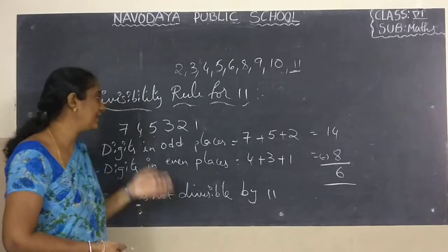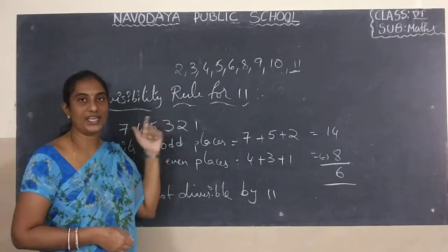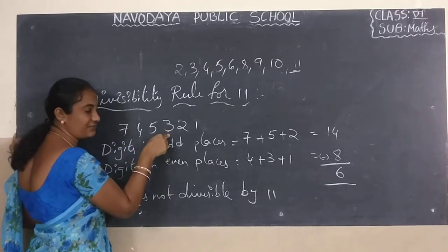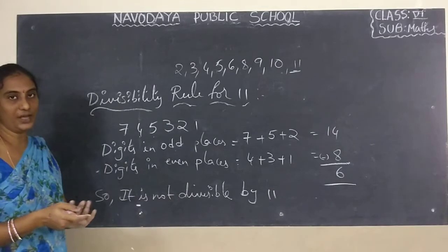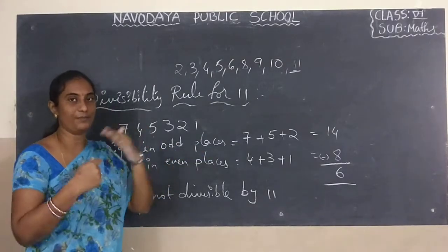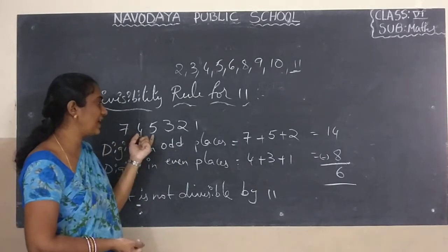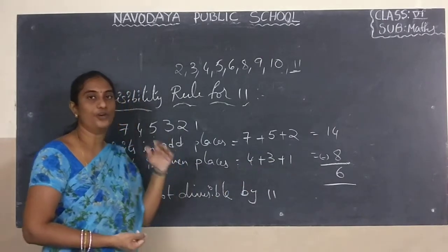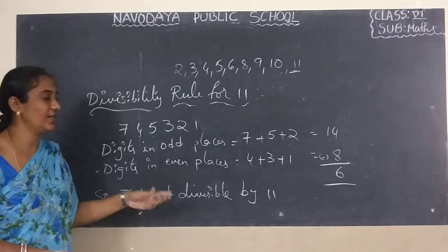Let me remind you again. The number is 7, 4, 5, 3, 2, 1. 4 is in second place — even place. 3 is in fourth place — even place. 1 is in sixth place — even place. Digits in odd places: 7 plus 5 plus 2 equals 14. Digits in even places: 4 plus 3 plus 1 equals 8. Difference: 14 minus 8 equals 6. 6 is not a multiple of 11, so it is not divisible by 11.